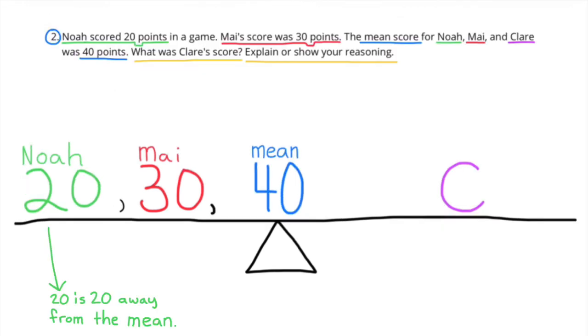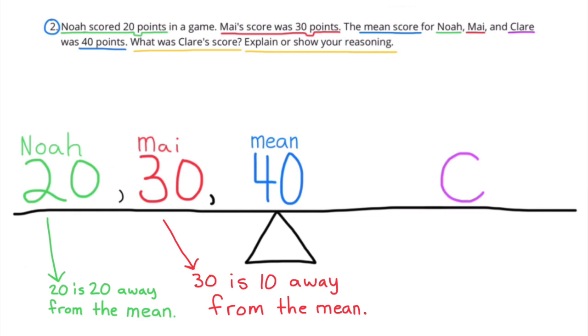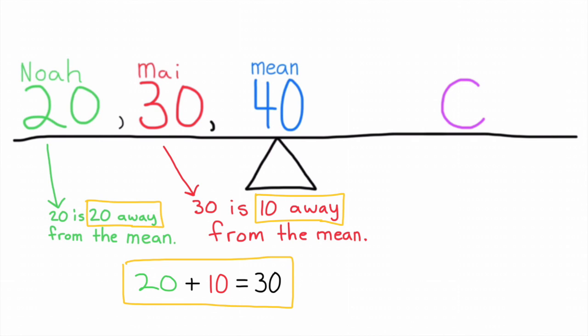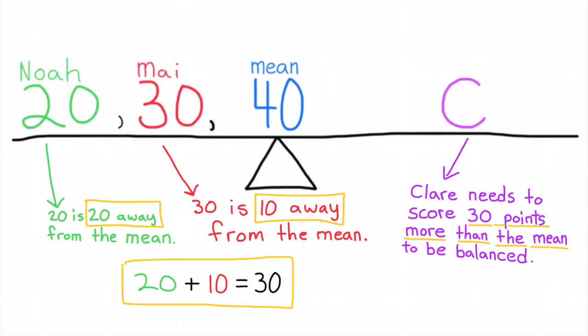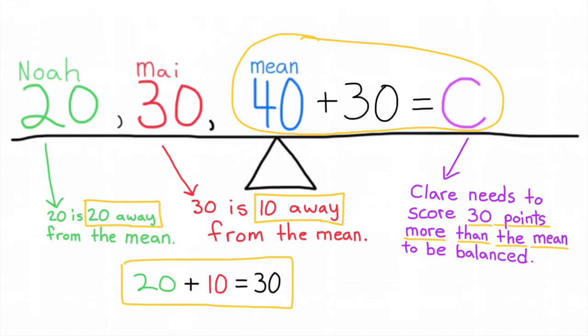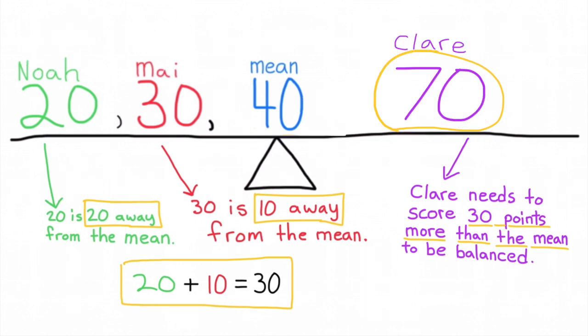20 is 20 away from the mean, or 20 is 20 away from 40. And 30 is 10 away from the mean, or 30 is 10 away from 40. So 20 plus 10 is 30. Claire needs to score 30 points more than the mean to be balanced, or Claire needs to score 30 points more than 40 to be balanced. And 30 points more than 40 is 70.